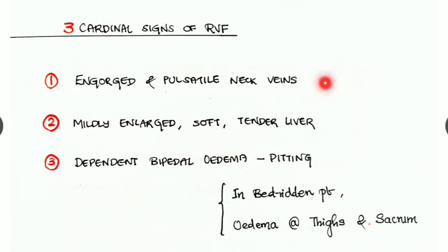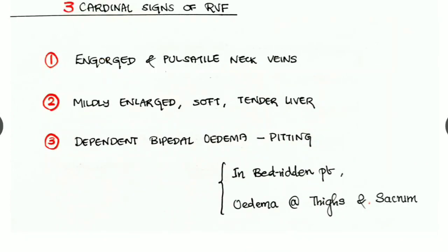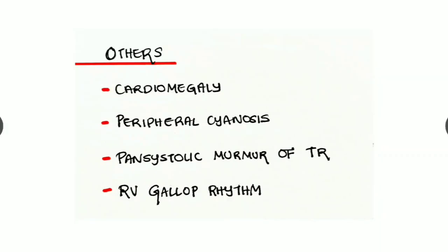The second sign is mild, enlarged, soft, tender liver — hepatomegaly or right hypochondrial tenderness. The third is dependent bipedal pitting edema; in bedridden patients the edema is seen at the thighs and sacrum. Other features of right ventricular failure include cardiomegaly, peripheral cyanosis, pansystolic murmur of tricuspid regurgitation, and right ventricular gallop rhythm.